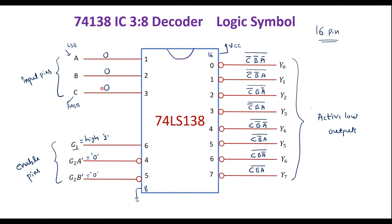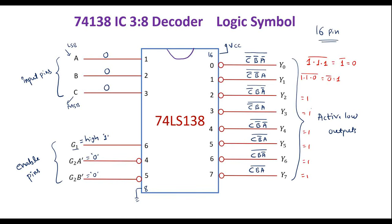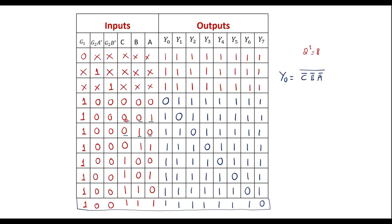Let me verify: if A = 0, B = 0, C = 0, then for Y0 we have (C̄B̄Ā)̄ = (1·1·1)̄ = 1̄ = 0. For Y1 we have (C̄B̄A)̄ = (1·1·0)̄ = 0̄ = 1. Likewise, Y2 through Y7 all equal 1. Only Y0 goes low when A = B = C = 0. This confirms that for any input combination, only the corresponding output line goes low while all rest remain high.